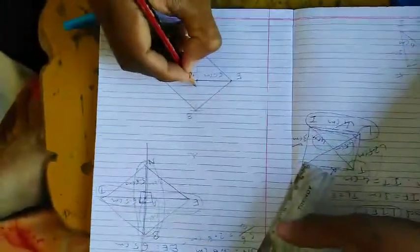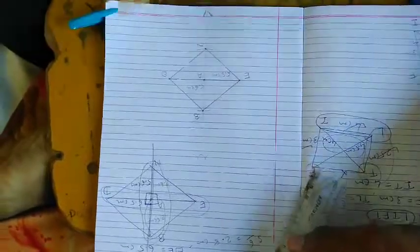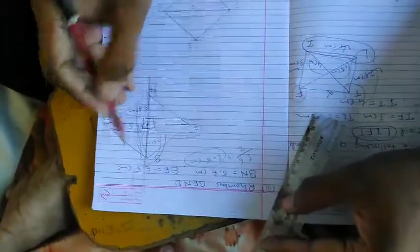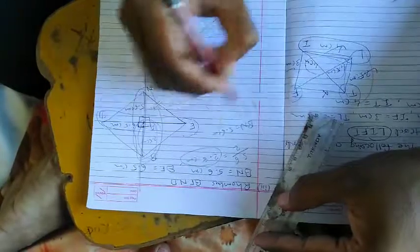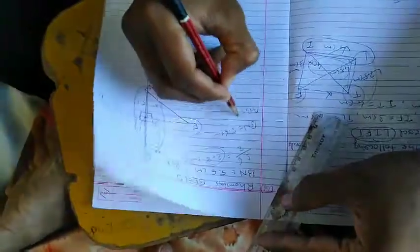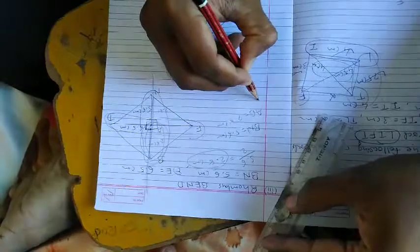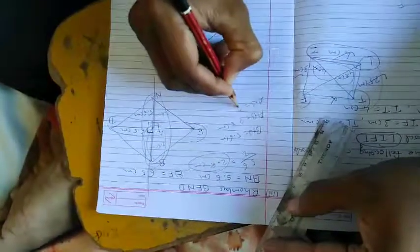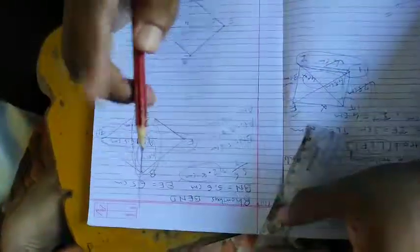Now connect them: connect BE, connect BD, connect EN, and connect BN. This length is 5.6 centimeters total, but you use 2.8 centimeters which is the half length of BN. So BN equals 5.6 centimeters, AB equals 2.8 centimeters, and AN equals 2.8 centimeters. All done.